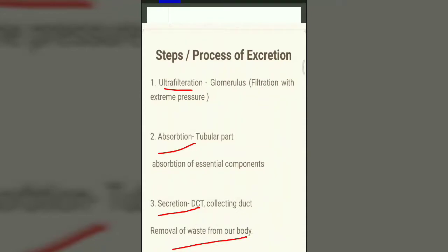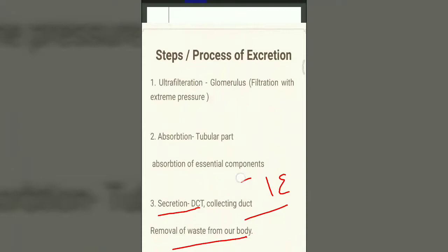The end product of secretion produced in our body is urine. The kidneys contain millions of nephrons that filter the blood so that waste — especially nitrogenous waste — is filtered out from the body and a watery liquid, that is urine, is sent out of the body. We have seen how the nephron works to produce urine. But urine removal also requires many other organs of the excretory system.